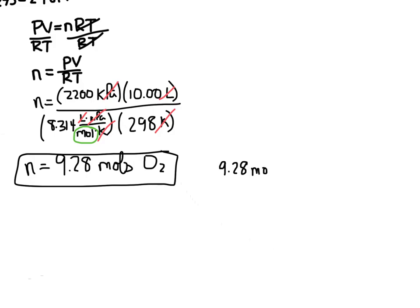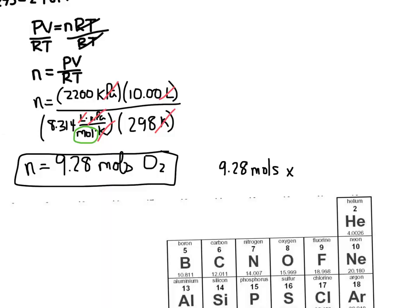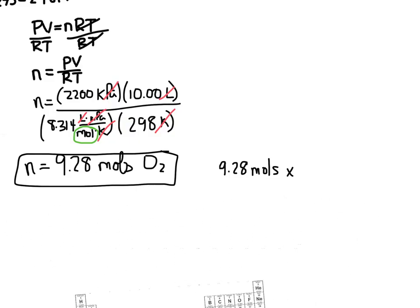So we have 9.28 moles, and I'm going to look on a periodic table to find the molar mass of O2. So if we look here at oxygen, we can see that the atomic mass for oxygen right here is 16, and there's two oxygens in this molecule, so we'll double that to 32. So we have 32 grams per mole.